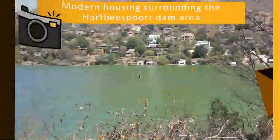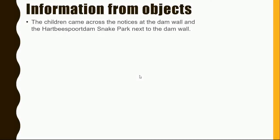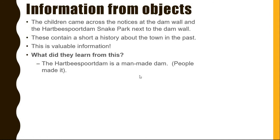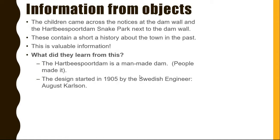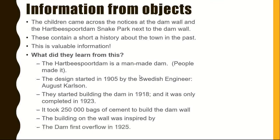Modern housing surrounding the Hartbeespoort Dam area. Information from objects: the children came across notices at the dam wall and at the Hartbeespoort Dam snake park. These contain a short history about the town in the past, which is very valuable information. The Hartbeespoort Dam is a man-made dam. The design started in 1905 by the Swedish engineer August Carlsson. They started building the dam in 1918 and it was only completed in 1923. It took 250,000 bags of cement to build the dam wall.